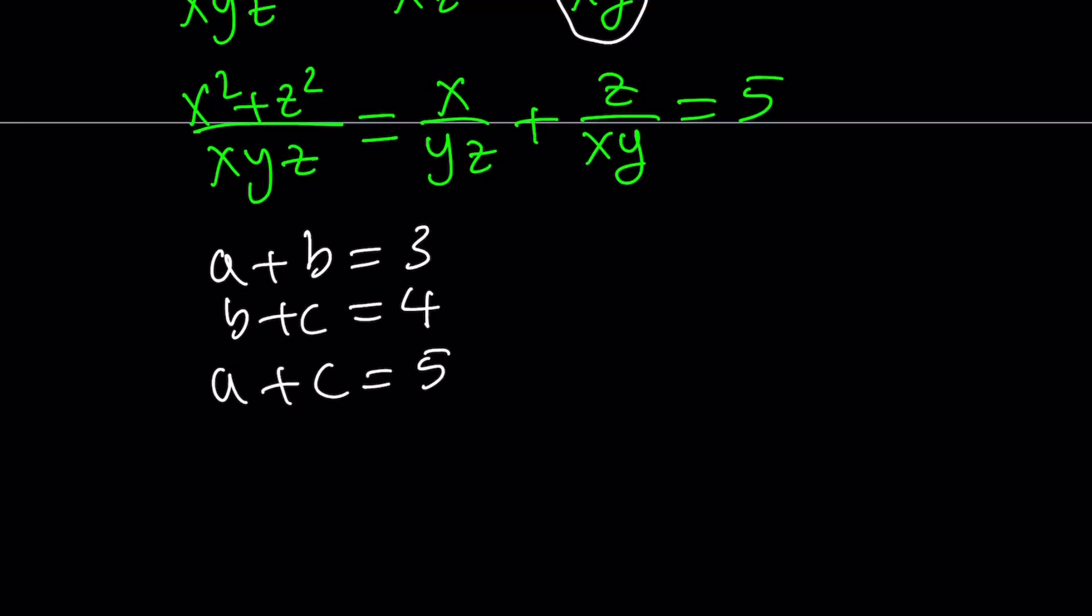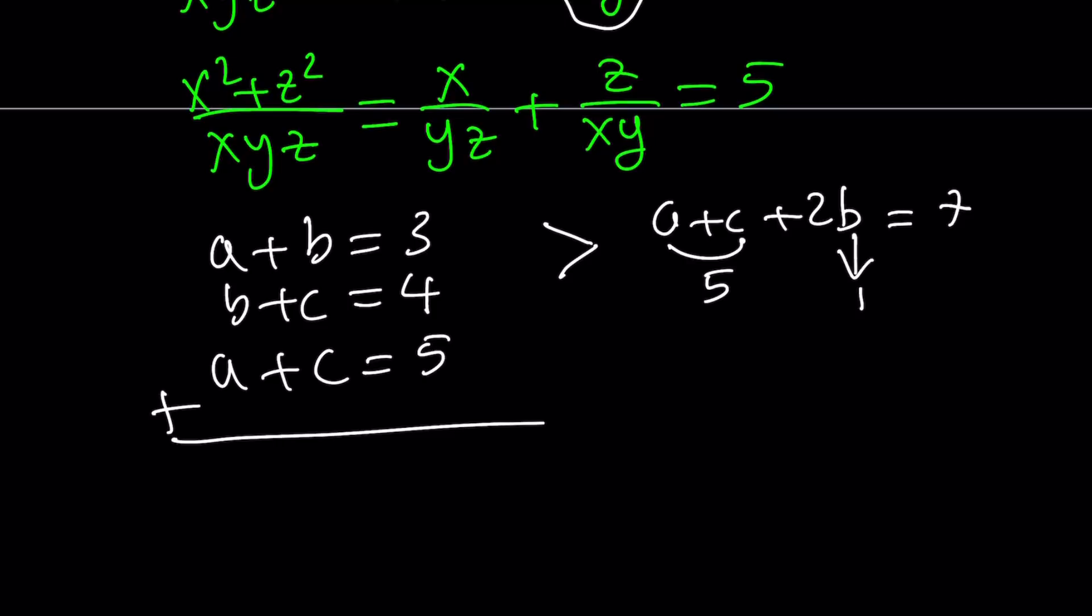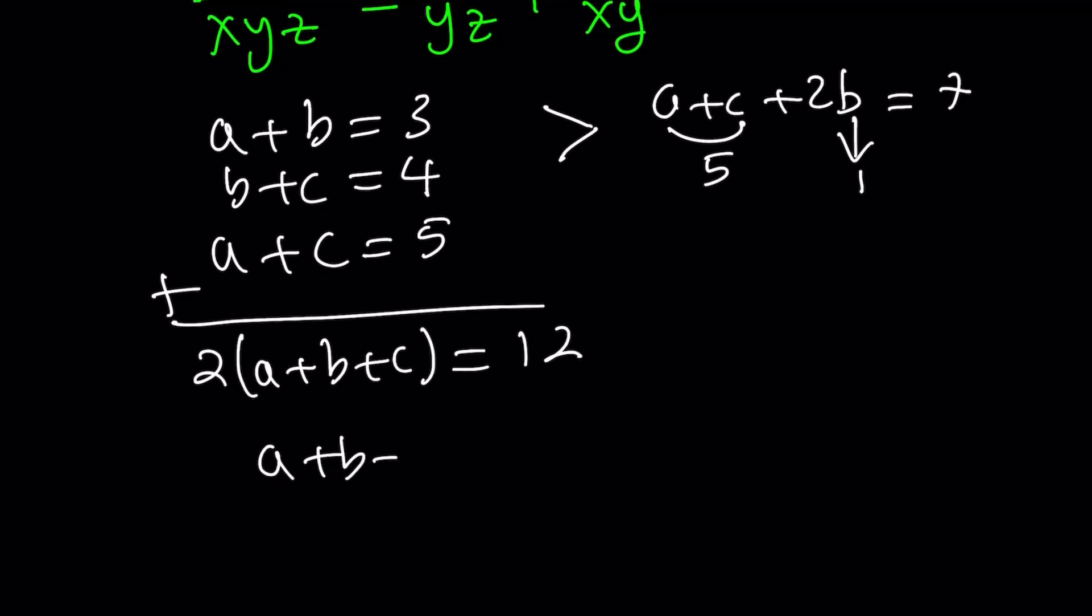Now, to solve this system, we have different methods. First method, for example, you can add the first two equations. That's going to give you A plus C plus 2B, or not 2B. That's a 7. We already know that A plus C is equal to 5. From here, you can find B equals 1. And by substitution, you can find everything else. That's one way to approach it.